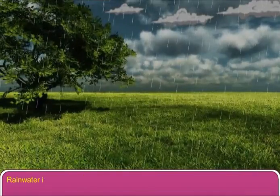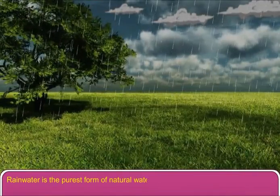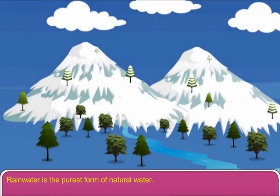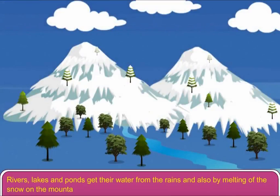Rainwater is the purest form of natural water. Rivers, lakes and ponds get their water from the rains and also by melting of the snow on the mountains.